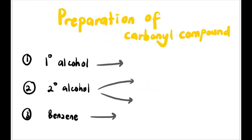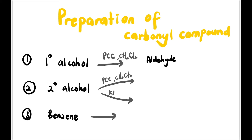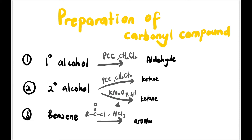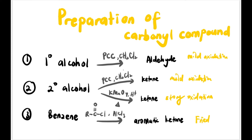Now let's learn the preparation of carbonyl compounds. We can prepare carbonyl compounds from either primary alcohol, secondary alcohol, or from benzene. For primary alcohol, use PCC in CH2Cl2 — we get aldehyde. For secondary alcohol, use PCC / CH2Cl2 (mild oxidation) or strong oxidation such as KMnO4 / H+ / heat — we get ketone. For benzene, use acyl chloride (RCOCl) with a Lewis acid catalyst like AlCl3 — we get aromatic ketone. Note: tertiary alcohol cannot be oxidized because it has insufficient hydrogen.